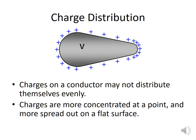A note on charge distribution on conductors: charges want to get away from each other, so in general they spread out as much as they can. On a sphere like the top of the Van de Graaff, they spread out quite evenly. But if you have a pointy shape, charges tend to build up at the point, and that is where discharge or lightning will happen — charges are more concentrated at a point and more spread out on a flat surface.